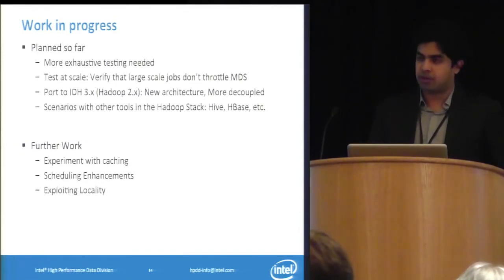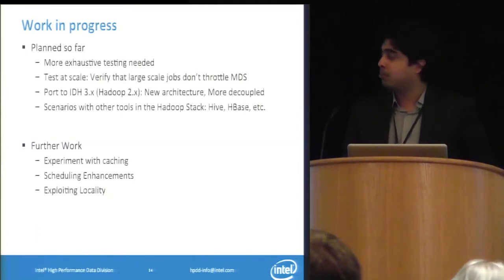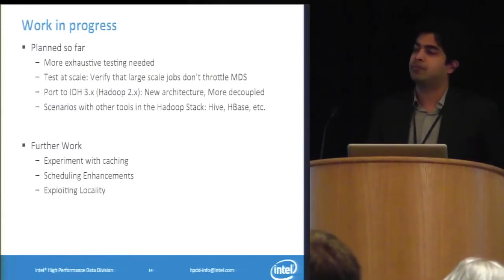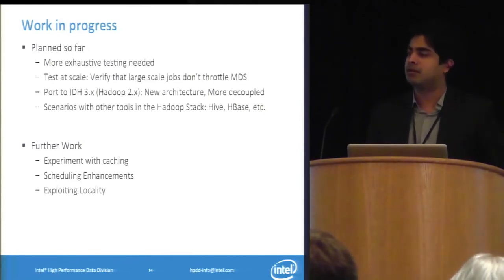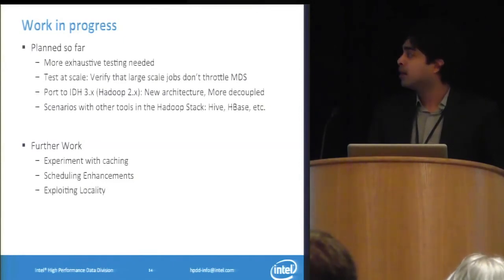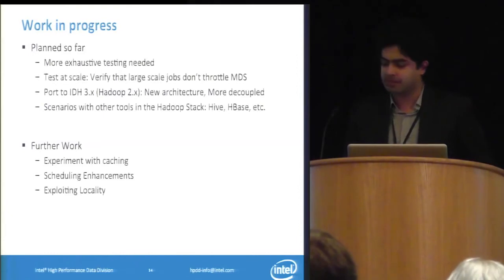Currently the code was based on the Hadoop 1 release using the internal Intel Hadoop distribution. We've been porting it to the Hadoop 3 release — Intel Hadoop 3 is based on Apache Hadoop 2. The advantage of Hadoop 2 is that it has decoupled the main framework components of scheduling, allowing you to supply your own shuffle plugin and scheduling plugin. It's more plugin-based and decoupled, making it easier to create customized components.